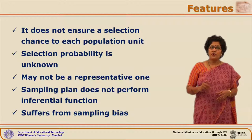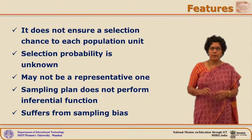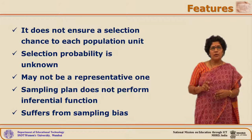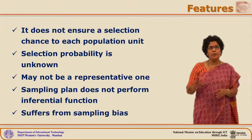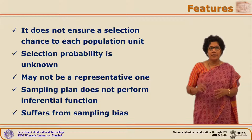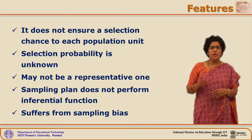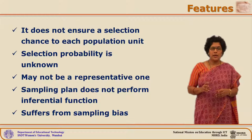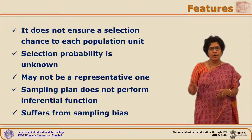Though there are various types, there are certain common features about non-probability sampling which are common to all these types. Since there is no randomization involved, every population unit does not get equal opportunity to be a part of the sample, and hence the selection probability of each sampling unit is unknown to the researcher. Thus, the resultant sample may not be the true representation of the population.